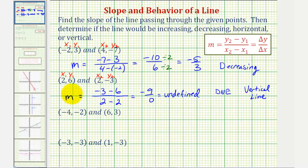So next, we have negative 4 comma negative 2 and 6 comma 3. So the slope m is equal to 3 minus negative 2 divided by 6 minus negative 4. So the numerator becomes 3 plus 2, that's 5. The denominator becomes 6 plus 4, that's 10. This simplifies. There's a common factor of 5. The slope is equal to 1 half.